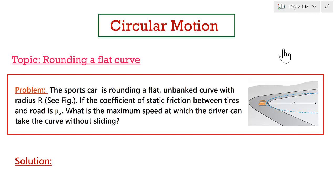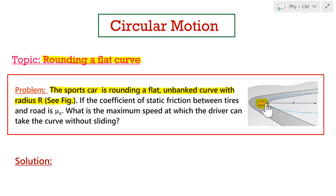The topic of this session is rounding a flat curve, and we will illustrate this using a problem. The problem says a sports car is rounding a flat unbanked curve with radius r as shown in the figure. This curve is horizontal and unbanked, meaning there is no sloping towards the outer radius of the curve — it is simply a flat curve with no banking.